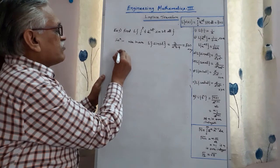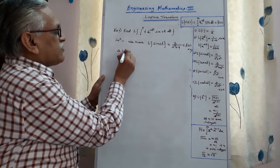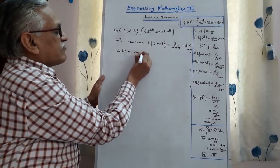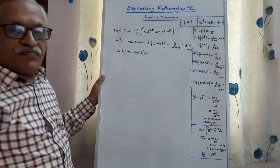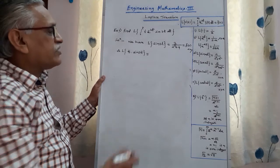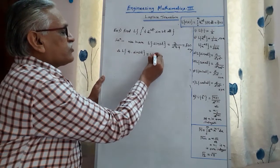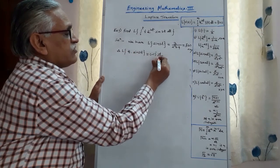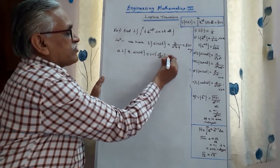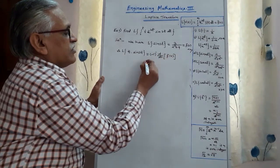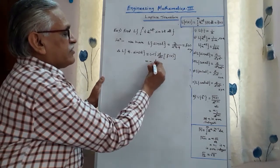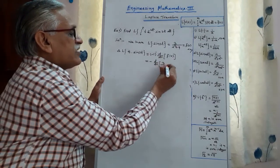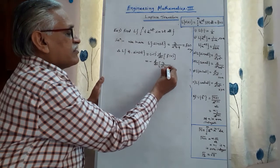Therefore, the Laplace transform of t·sin(3t), using the theorem for multiplication by t^n: as per that theorem, it is (−1)^n times the nth order derivative of f̄(s). With n = 1, it is −(d/ds) of f̄(s), where f̄(s) = 3/(s² + 9).